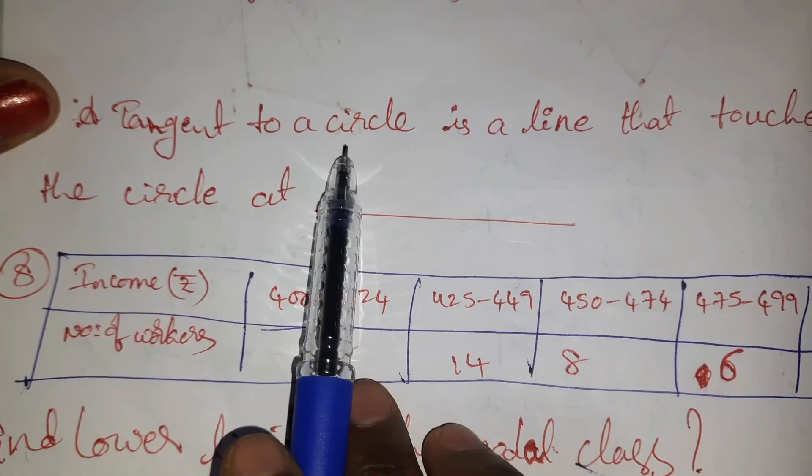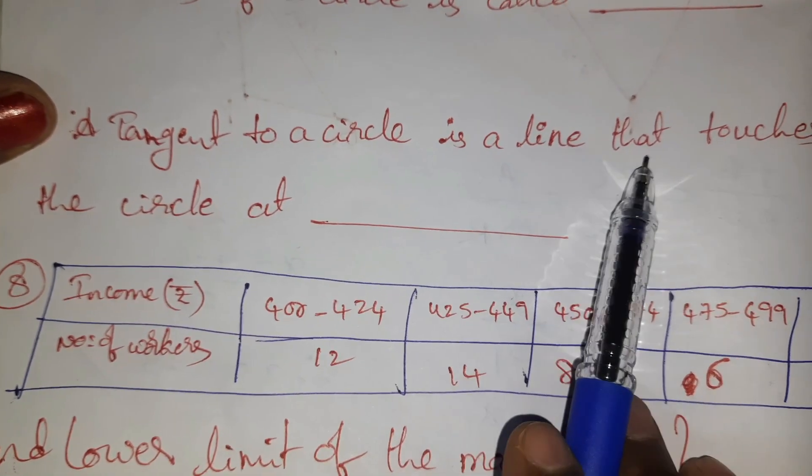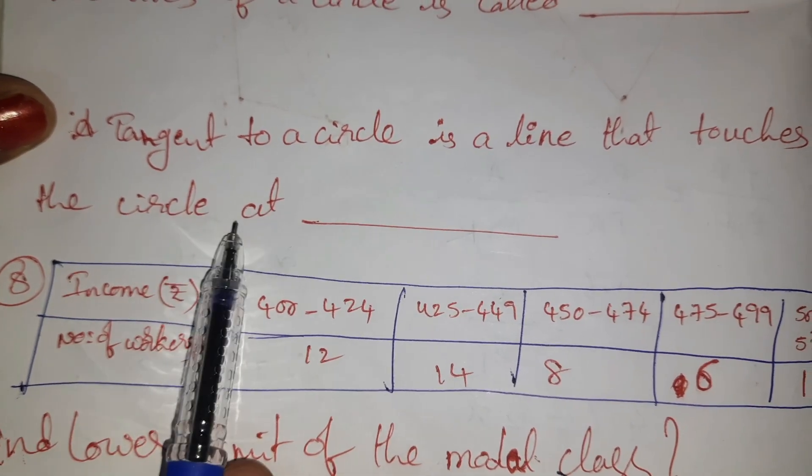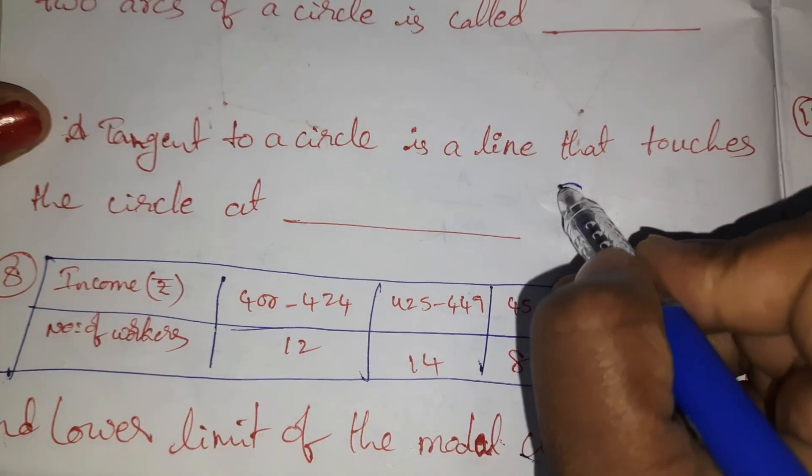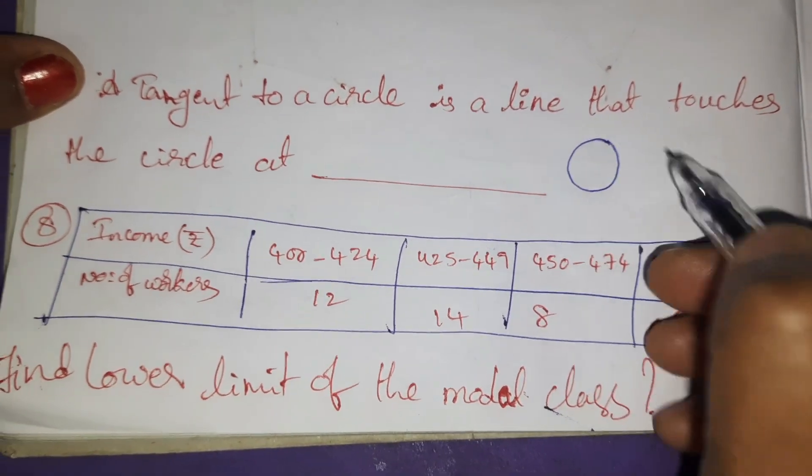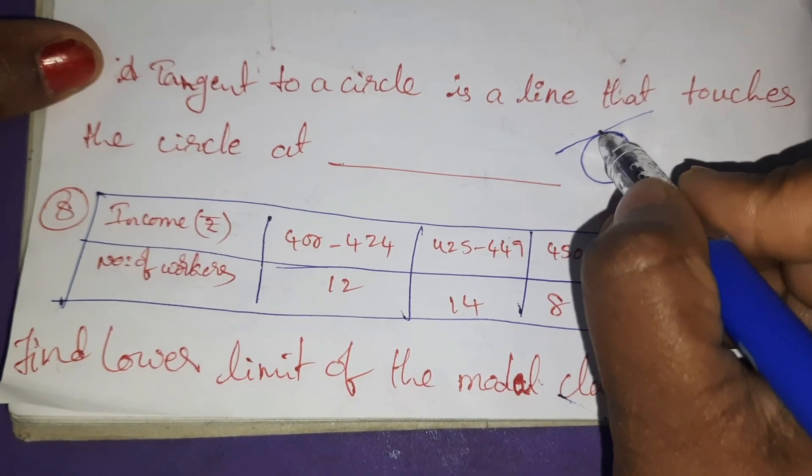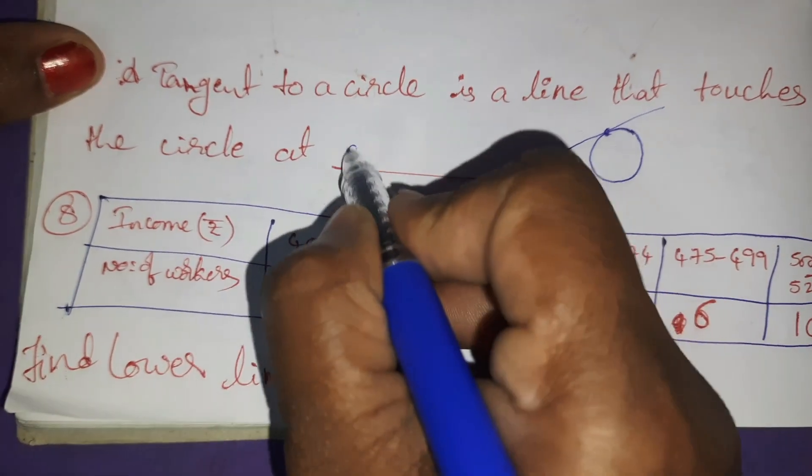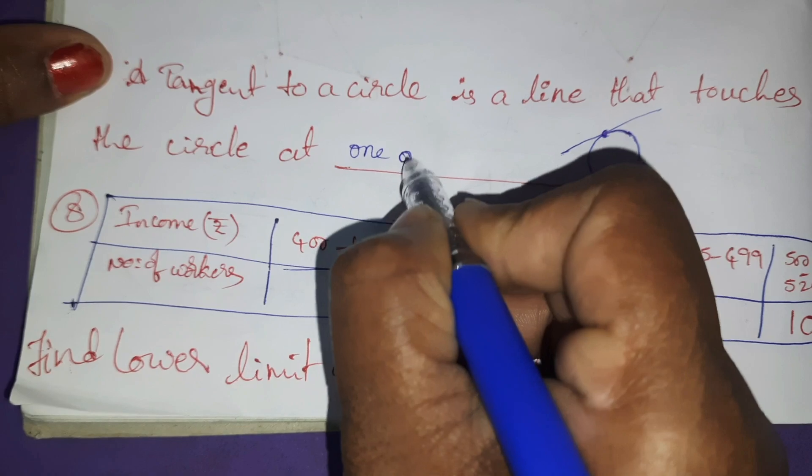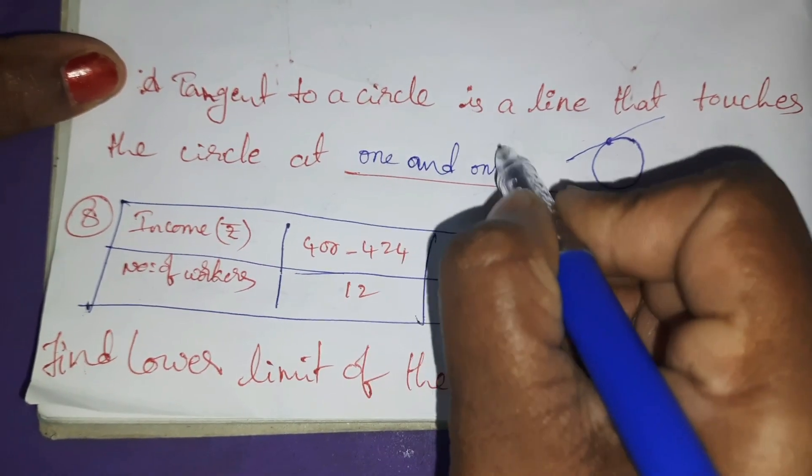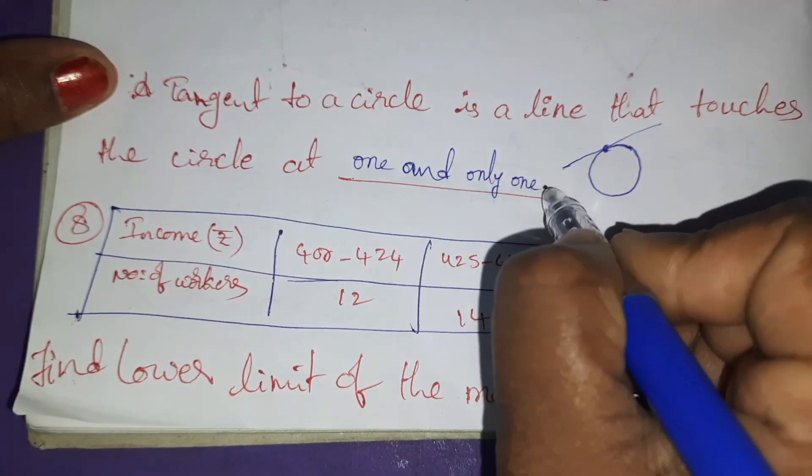The tangent to a circle is a line that touches the circle at... This is a circle. A tangent to the circle touches at one and only one point.